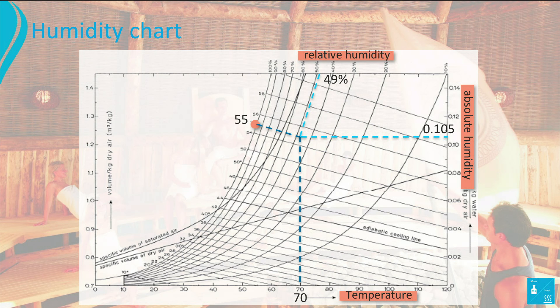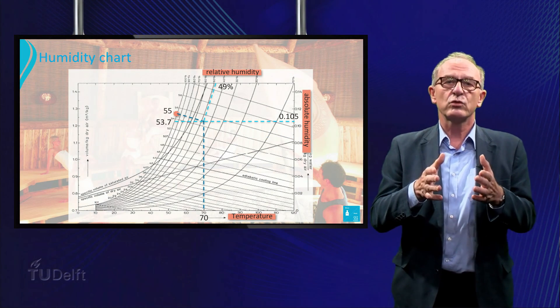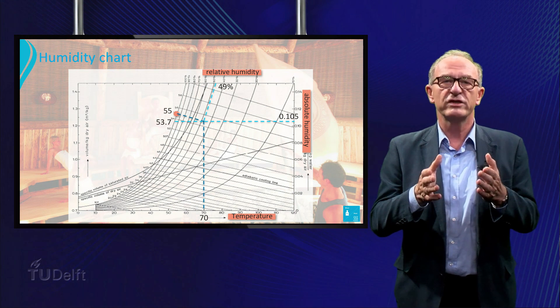Cooling the air increases the relative humidity while the absolute humidity stays constant. In this chart, we can see that air with an absolute humidity of 0.105 kg water per kg dry air is saturated at 53.7°C. This is the so-called dew point where condensation of water starts.